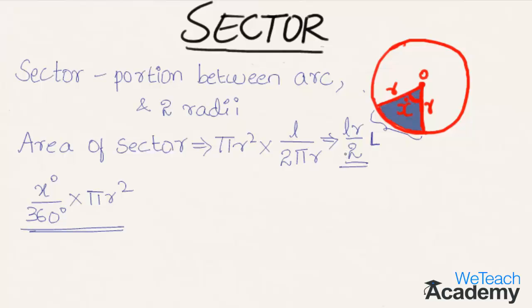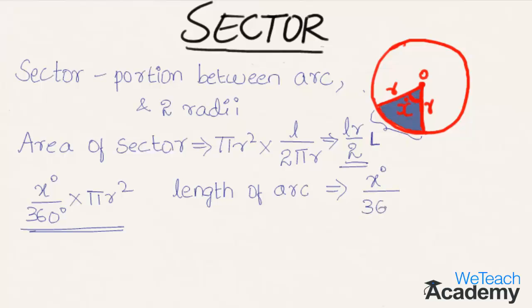Coming to the length of the arc: the length of the arc is given by the formula — the angle made by the arc, x degrees, divided by the total angle 360 degrees, multiplied by the total perimeter 2 pi R.